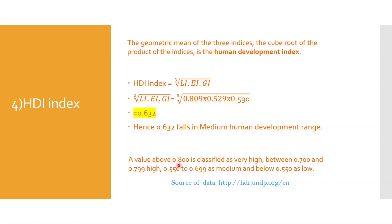A value above 0.800 is classified as very high HDI, between 0.700 and 0.799 is high, 0.550 to 0.699 is medium, and below 0.550 is low. The HDI of Bangladesh falls in the medium range. This was all for calculating the HDI Index.